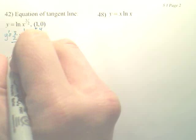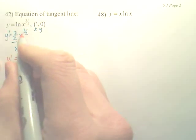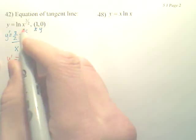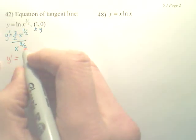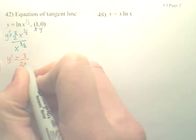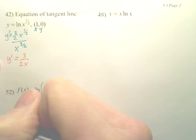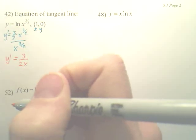We now have y prime equals, and it looks like when you divide these, you're going to subtract the powers. So, 1 half minus 3 over 2 is negative 1. So, it looks like 3 over 2x. The x will drop to the bottom, because 1 half minus 3 over 2.